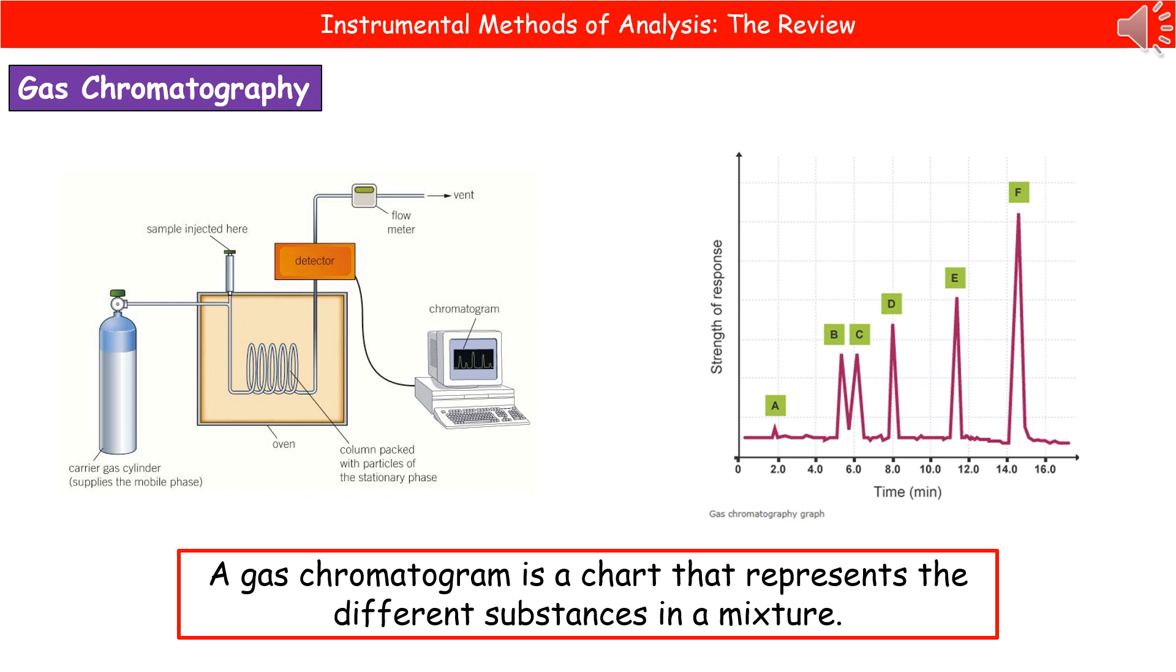As it then comes out the other side it's picked up by the detector. Depending on the speed at which those particles have moved through the stationary phase is going to determine when they come out the other side and therefore when the detector picks them up. The detector is then put onto a computer screen and that's where we see our chromatogram which is our little graph that shows us what we've got present. I've given you an example chromatogram on the right there.